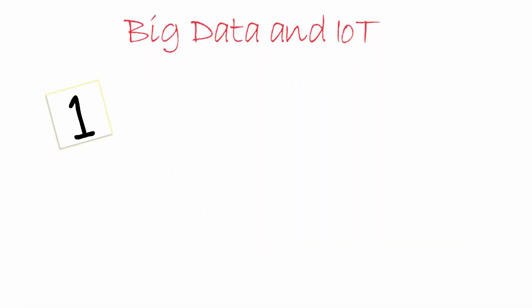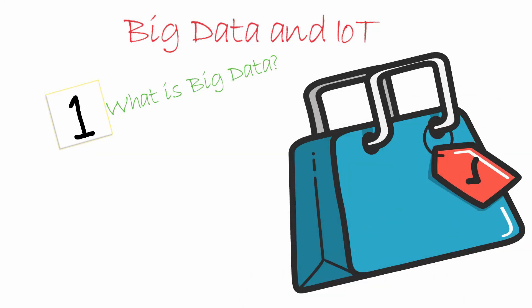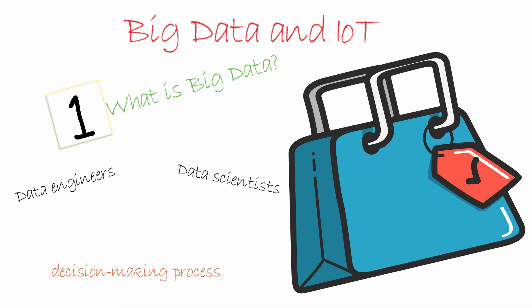Now let's have a look at big data. As the name implies, big data is just a huge quantity of related data. This is a new field that has emerged in the past decade with the advent of the internet and improvements in data storage technologies. Engineers in these fields are called data scientists or data engineers, and their job involves analyzing huge amounts of data and finding patterns, which can later be used in decision-making processes.